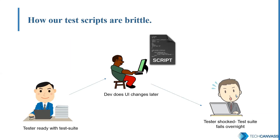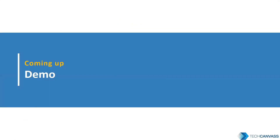Let's understand how test scripts become brittle. In this diagram, the tester puts a lot of effort in creating the automation test pack and finally leaves for the day happy and satisfied. Later, the developer as part of some requirement change modifies some web elements — he renames the locators and the IDs. The next day when the tester reruns the test suite it fails, and he is completely shocked as he has to put all that effort again to make the test suite work. Let's have a demo to understand test brittleness.